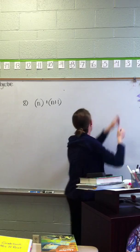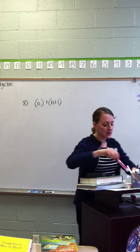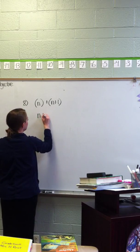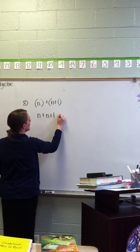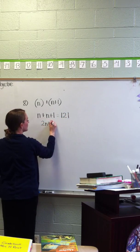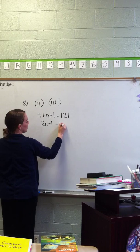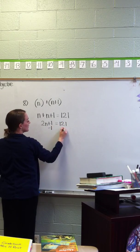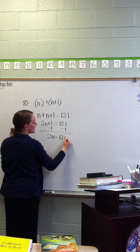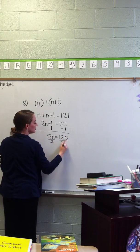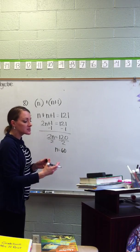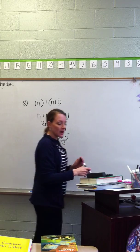Alright, so I have n, I draw my parentheses, n plus n plus 1 is equal to 121. 2n plus 1, I combine my like terms, is equal to 121. Subtract 1, subtract 1. 2n is equal to 120. Divide both sides by 2, n is equal to 60. So what are the numbers? 60 and 61.